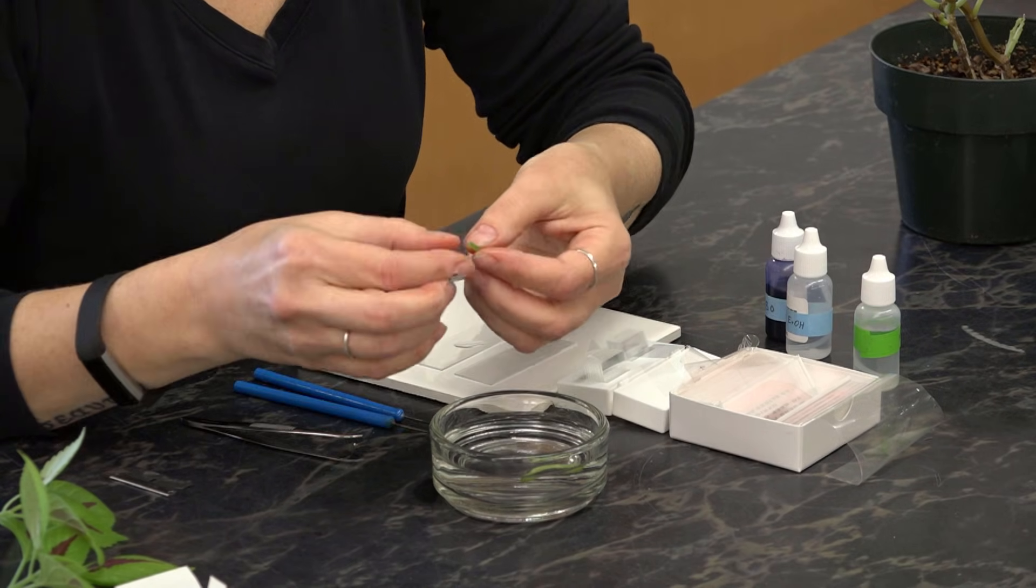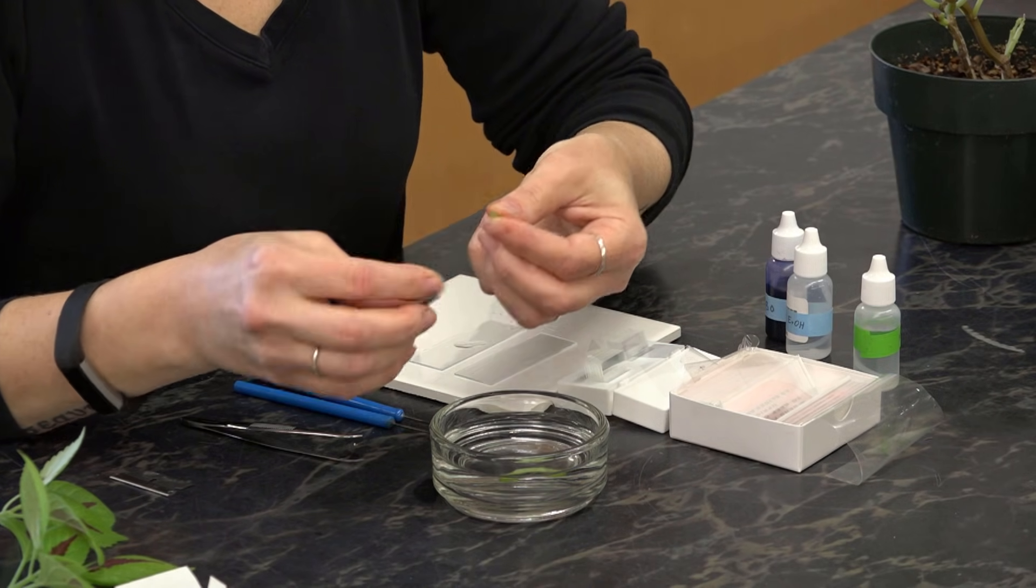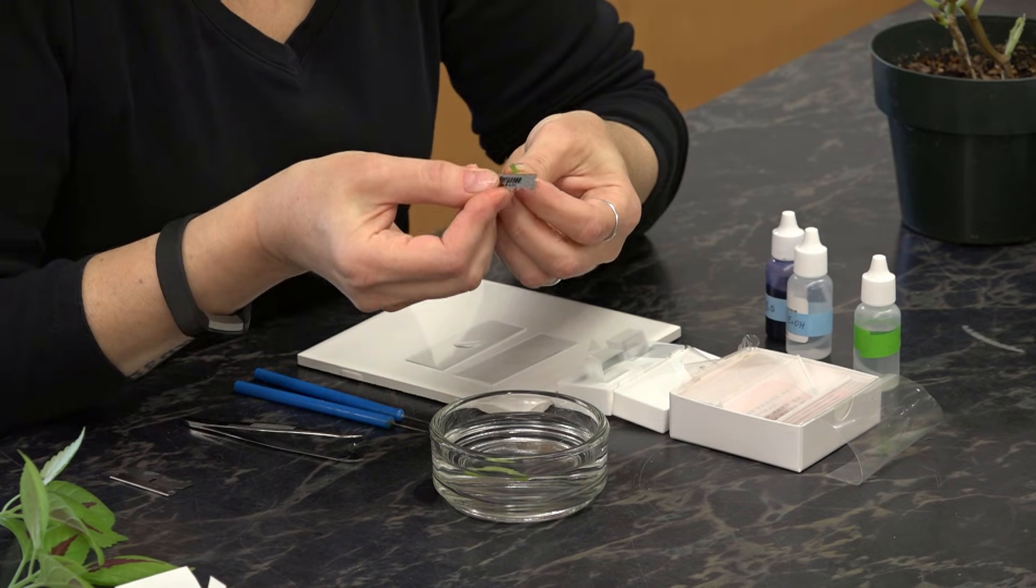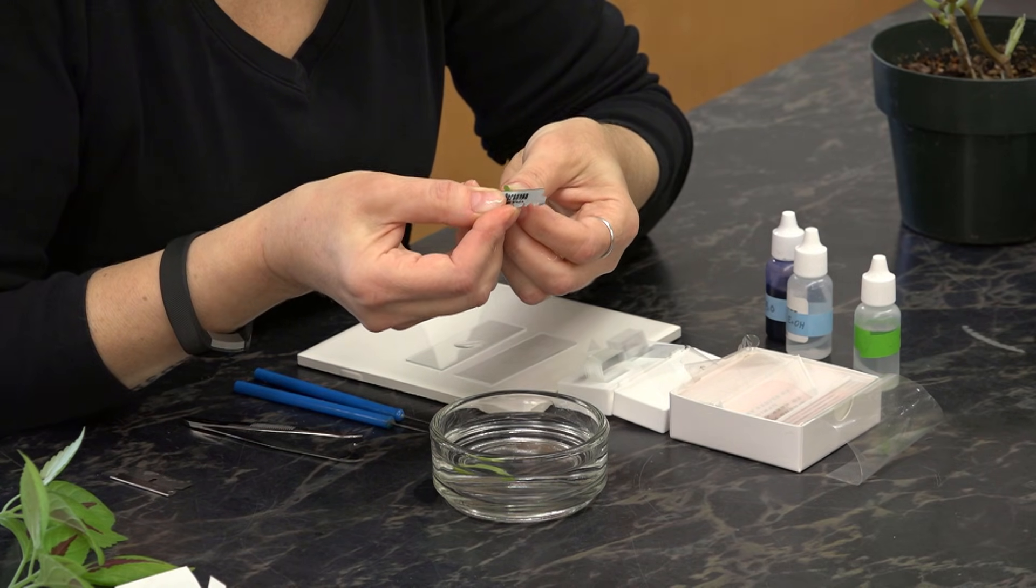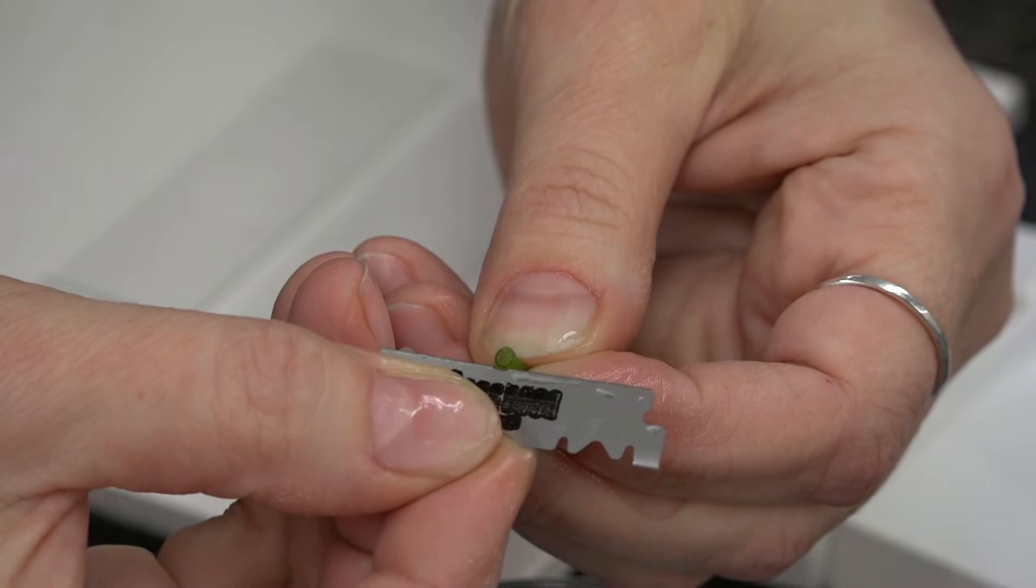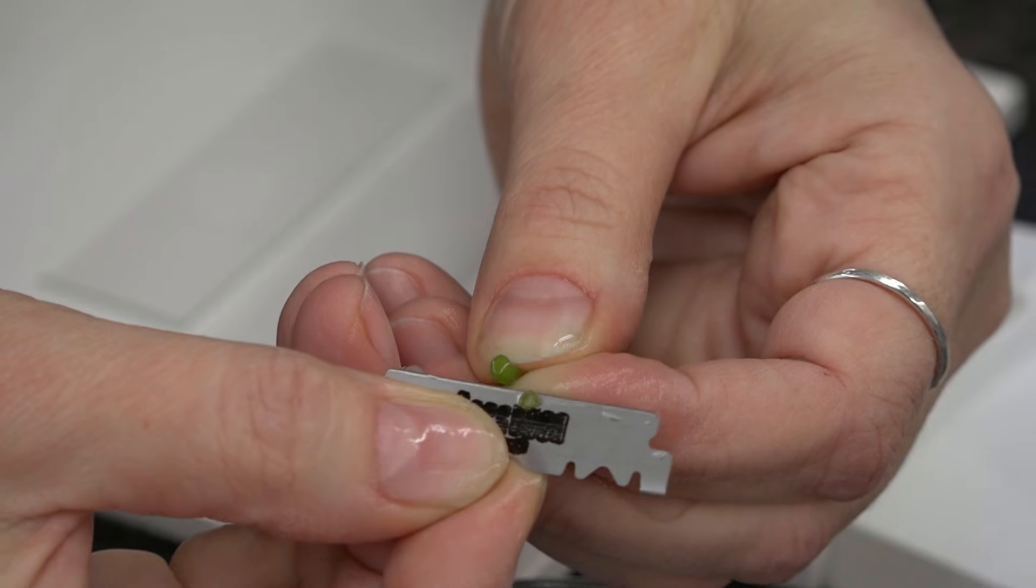Then to make a cross section, hold your material firmly in your hand and draw the blade towards you, trying to make the section as thin as you can.